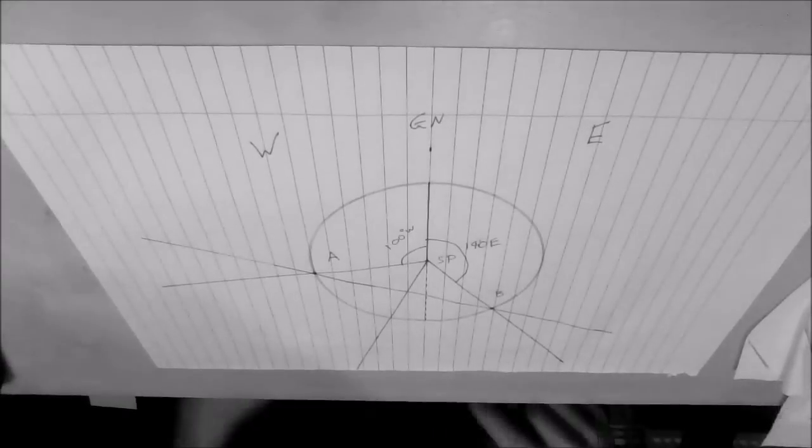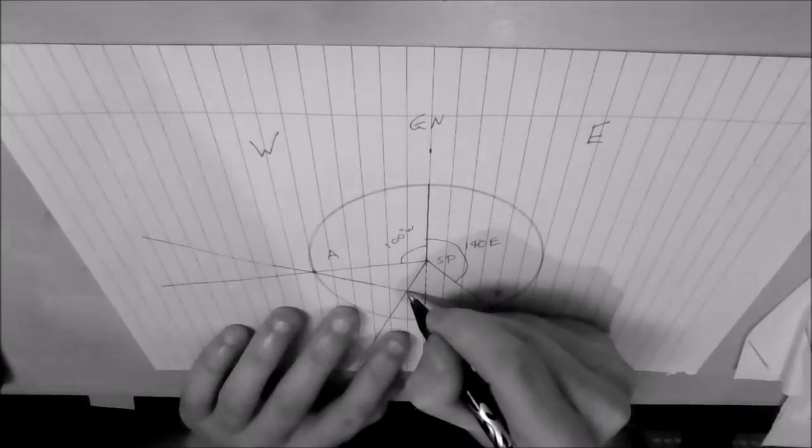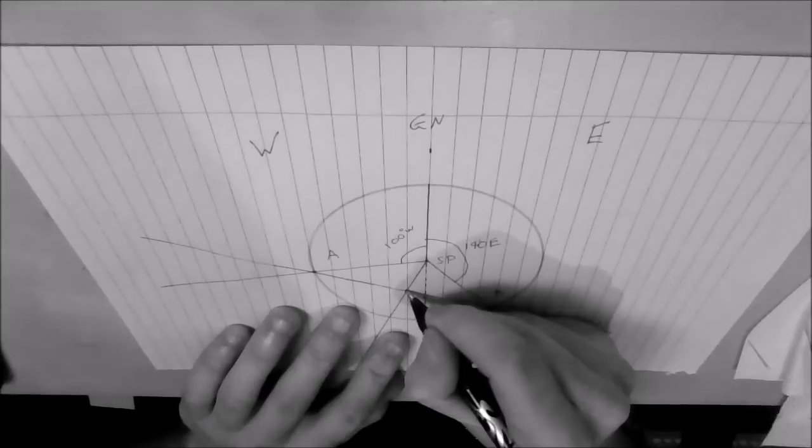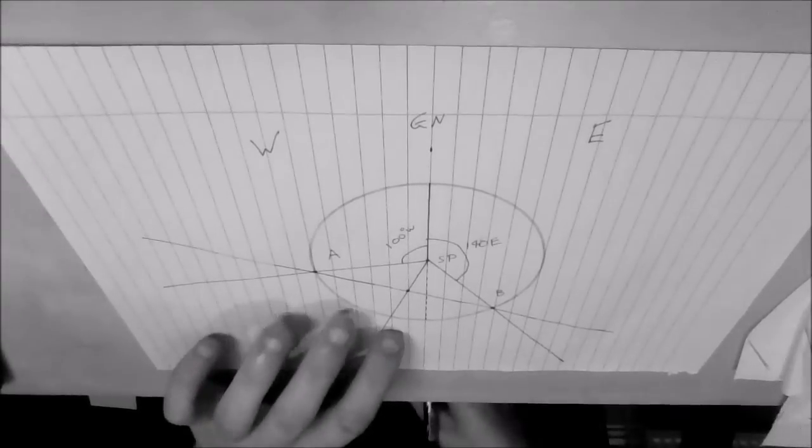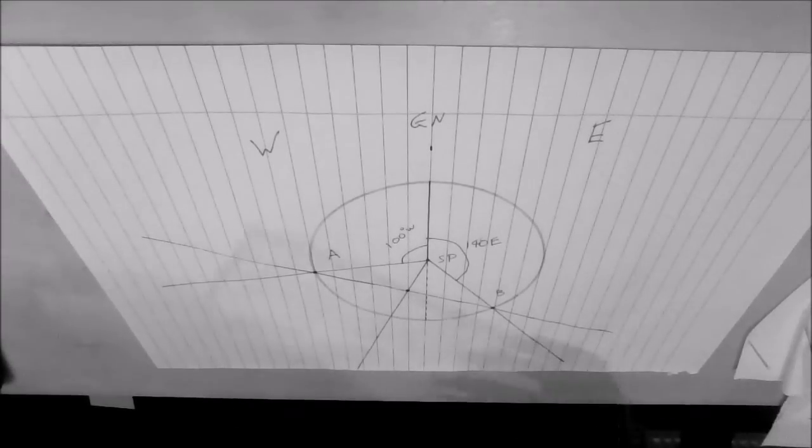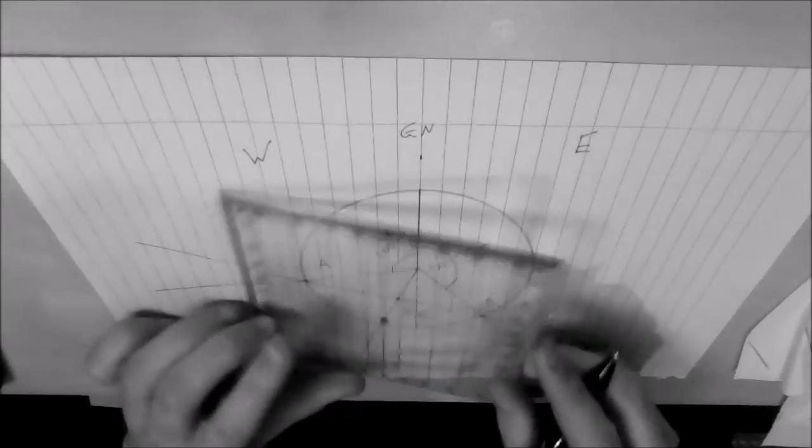OK, so what we'll do now is put a dot at that point where those two lines now intercept, and this is where we want to place our square protractor.